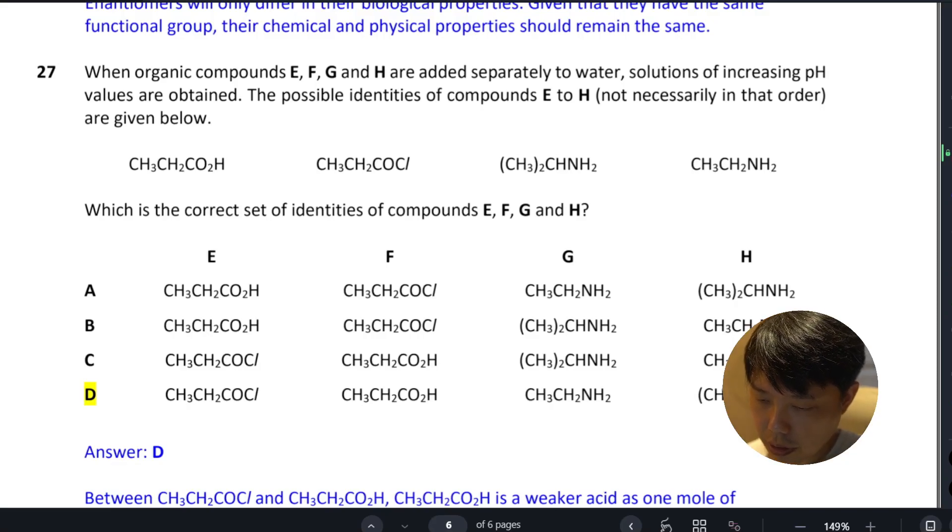Okay, so question 27 - they want you to list the compounds E, F, G, and H in order of increasing pH.